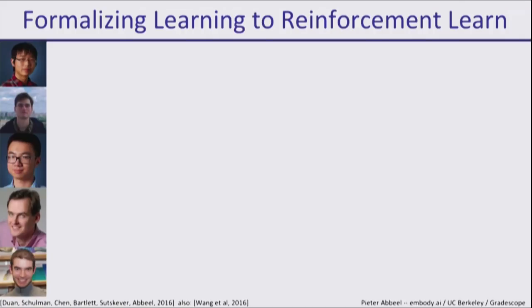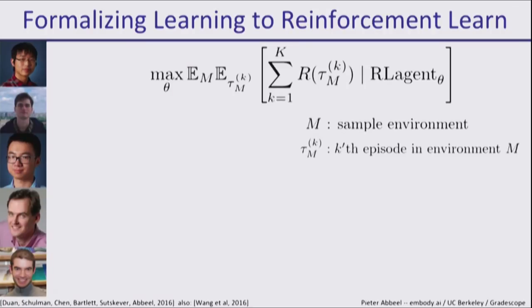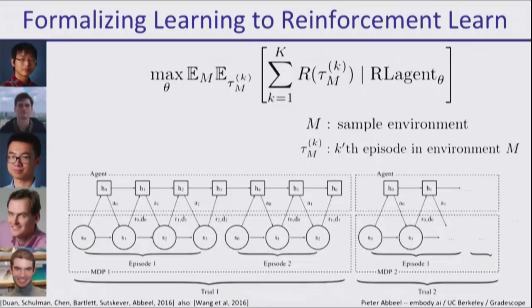How can we formalize learning to reinforcement learn? This formalism was published almost identically out of OpenAI and Berkeley and then DeepMind. Here's the formulation. We try to find an agent, some parameter vector theta that parameterizes the agent. That could be code, a neural net, whatever is a good representation. We want theta to be such that if you sample an environment at random and then sample trajectories executed by that agent in the environment, that agent collects a lot of reward. This agent is not just a policy. It's allowed to adapt over time.